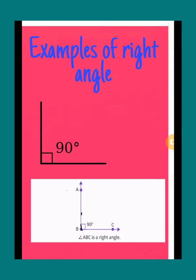Here are some examples of 90 degree. This is the angle of 90 degree, and the second figure we can write as angle ABC is the right angle, or we can write as angle ABC is equal to 90 degree.